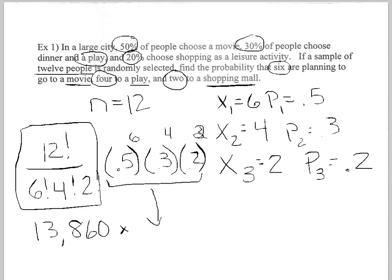Go ahead and try this problem. Pause the video here if you want. The answer to this problem ends up being 0.039. So the probability that if you select twelve people and you want six to go to the movie, four to the play, and two to the shopping mall, the probability that that will happen is 0.039.